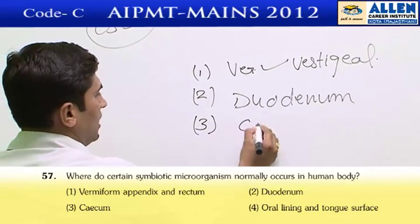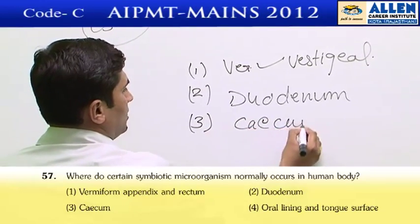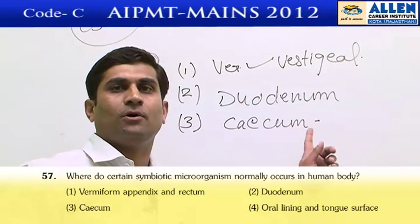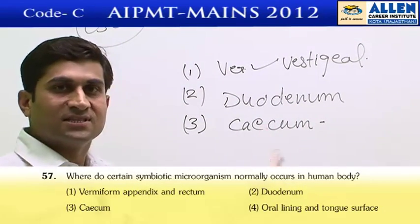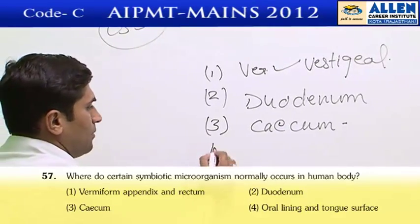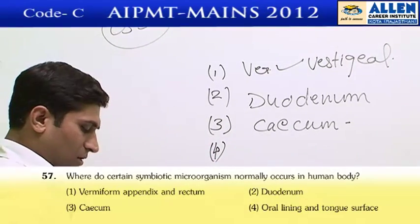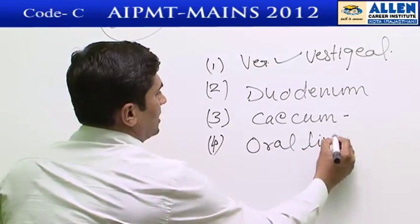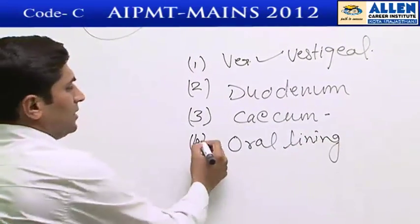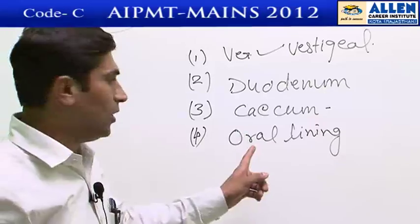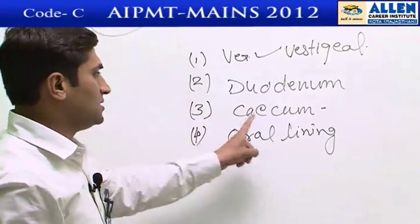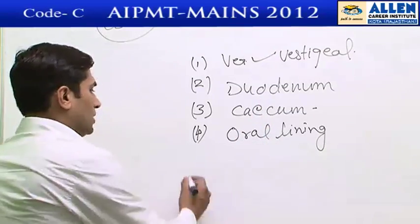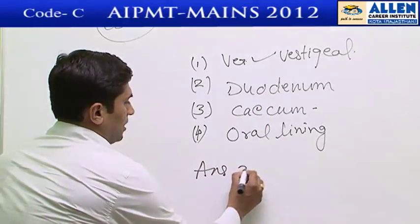Option three is the cecum — this is a blind sac and symbiotic microorganisms are present here, which synthesize certain B vitamins. Option four, the oral lining, is not correct as symbiotic microorganisms are not found there. So in humans, the cecum is the blind sac where symbiotic microorganisms are present. Answer is option three.